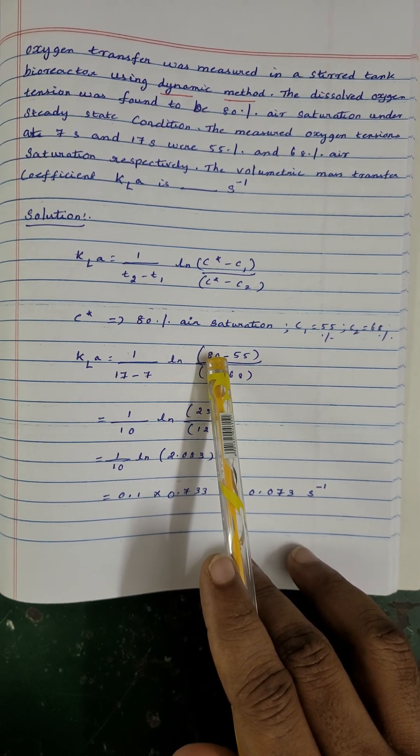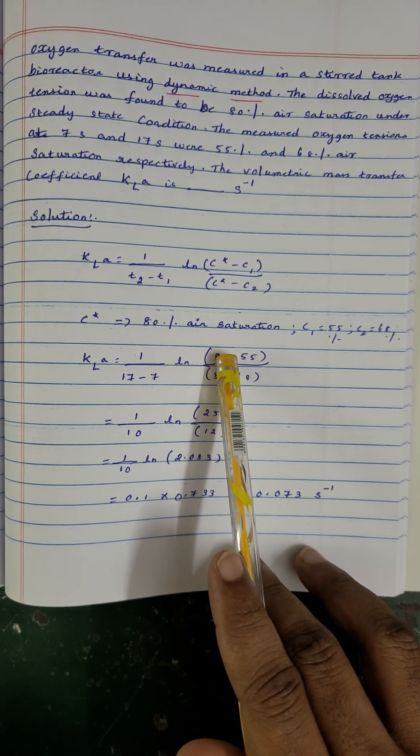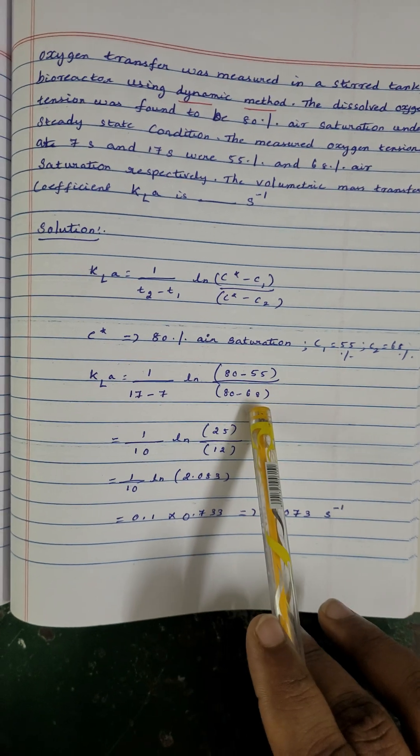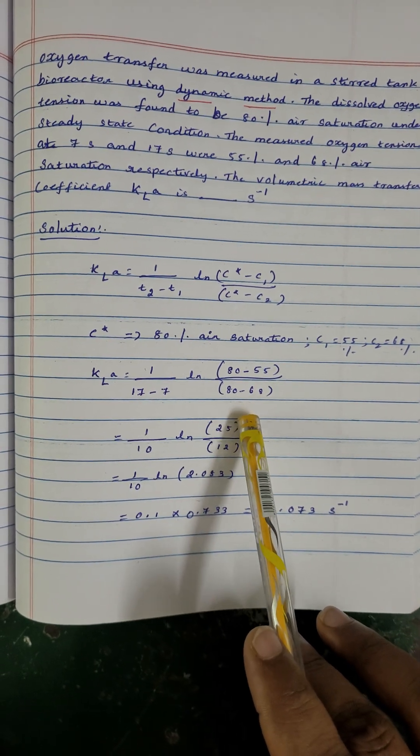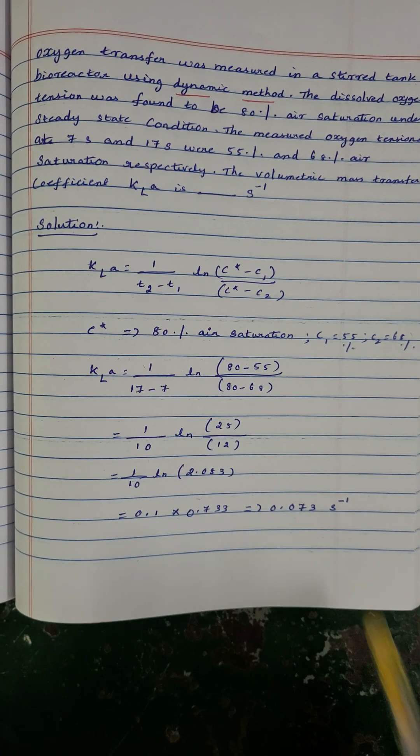C1 and C2 were given. Substituting the values in the formula, we get the value 0.073 per second.